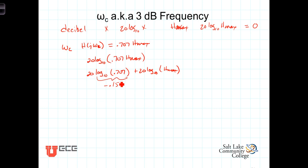And I should have pointed out that we're talking about the magnitude of this now. In dB, the magnitude of H of j omega sub c then is equal to 20 log base 10 of H max minus 3, and the units of this is decibels.